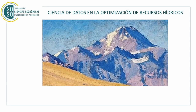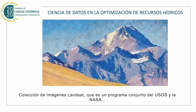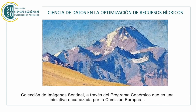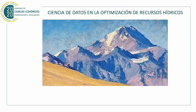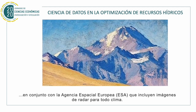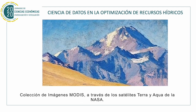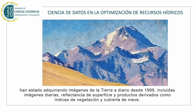Analysis of satellite images. Collection of Landsat images: a joint program from USGS and NASA. Collection of Sentinel images through the Copernicus program, an initiative headed by the European Space Agency (ESA), which includes radar images for all weather conditions. MODIS images collection through the Terra and Aqua satellites from NASA has been acquiring images of Earth daily since 1999, including daily images, surface reflectance, and derived products such as vegetation index and snow cover.